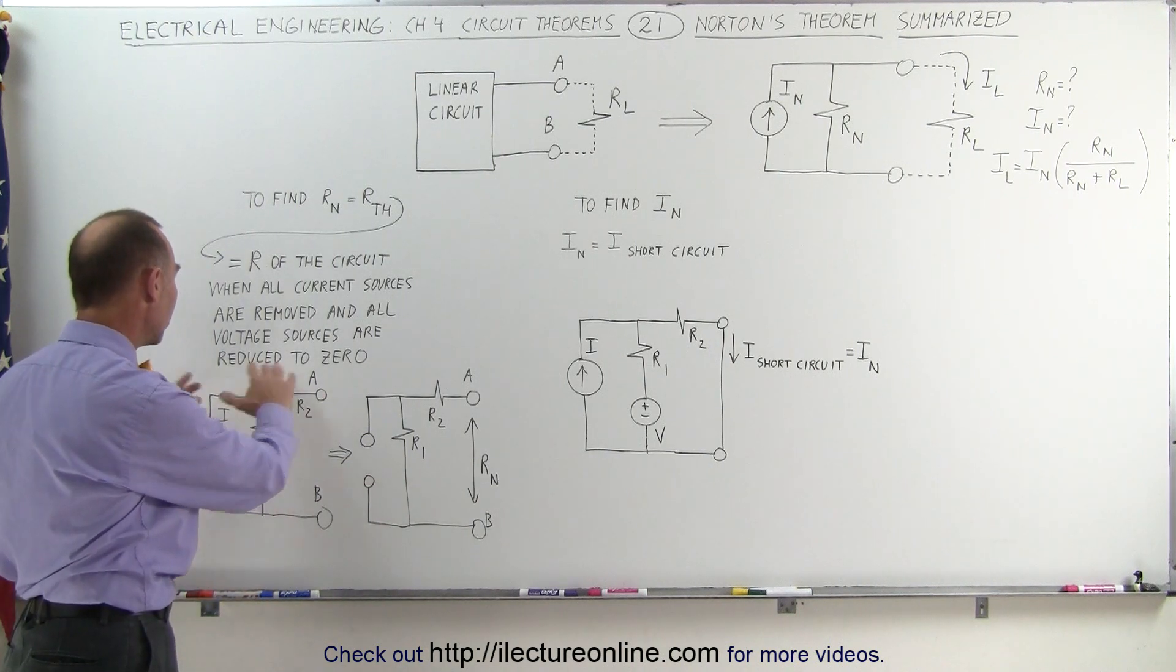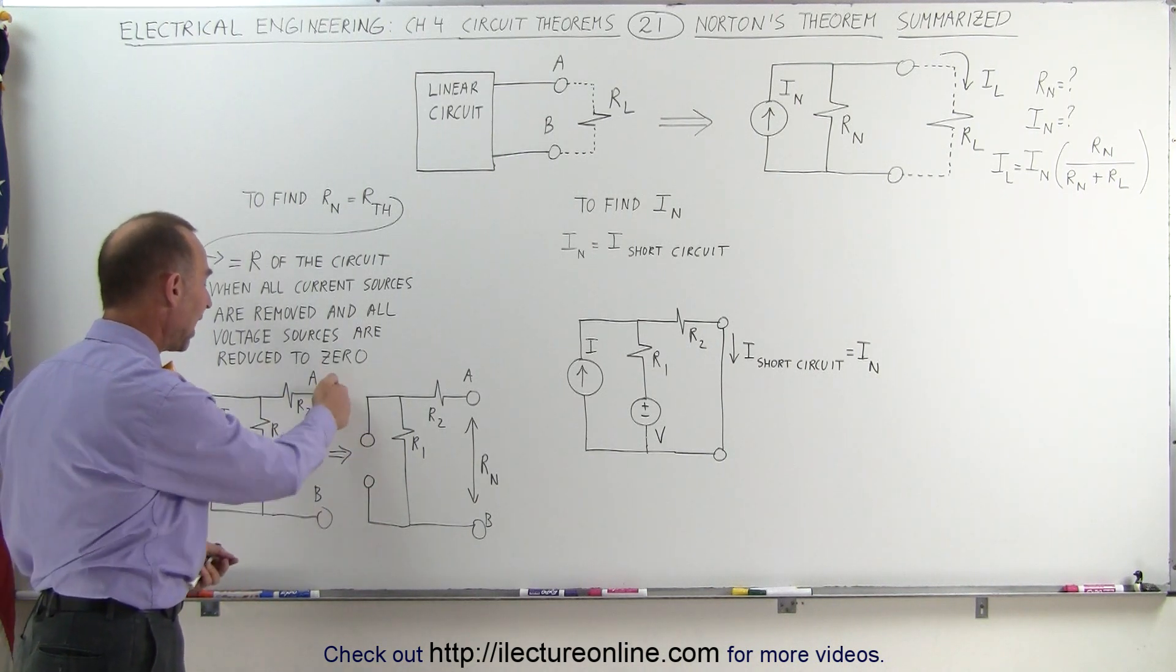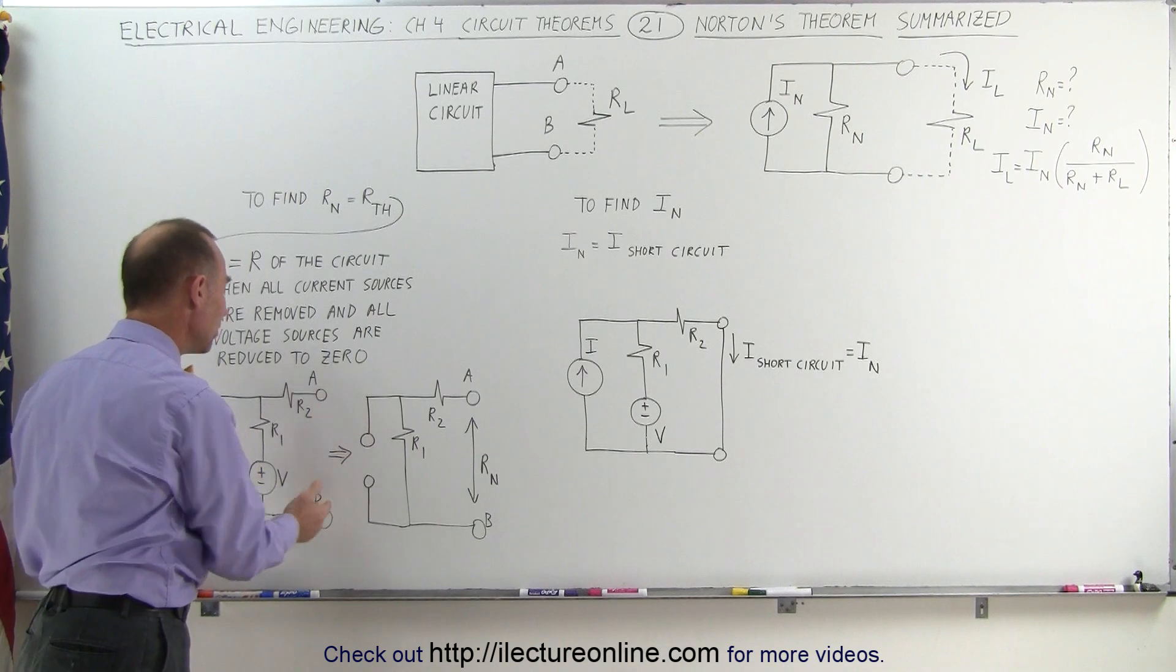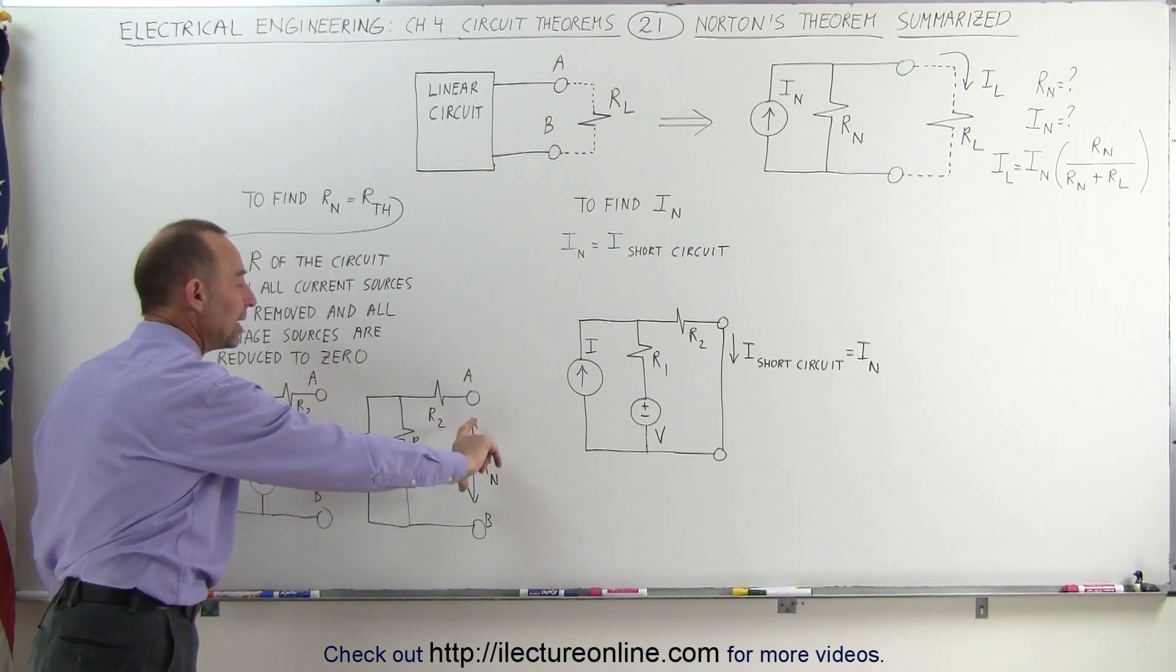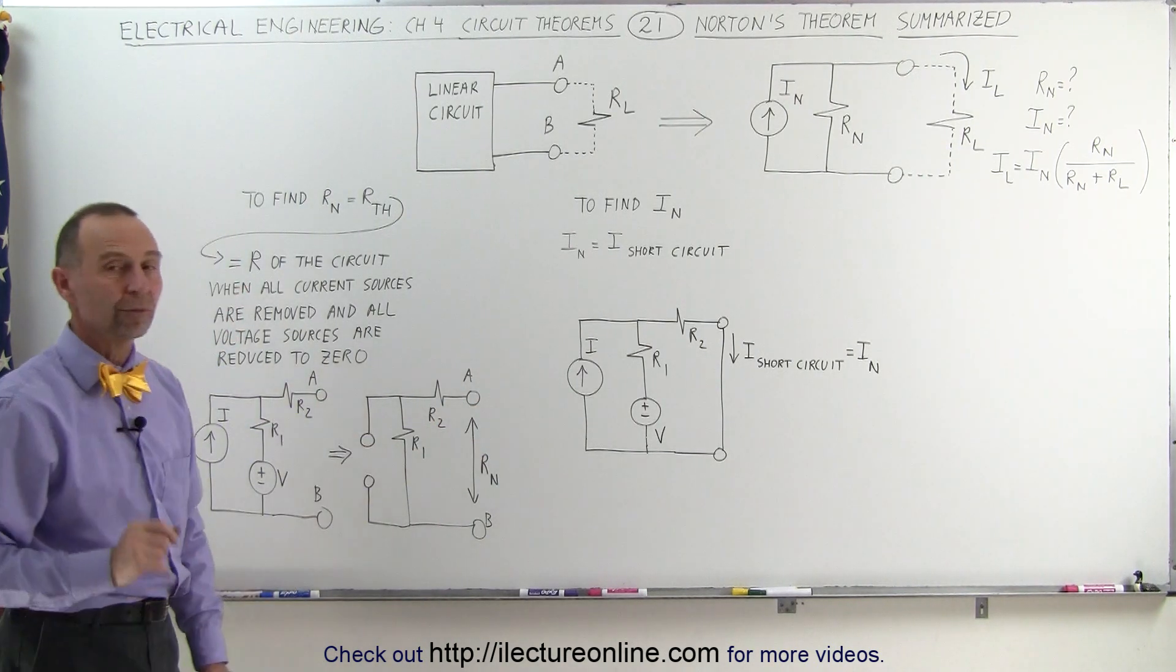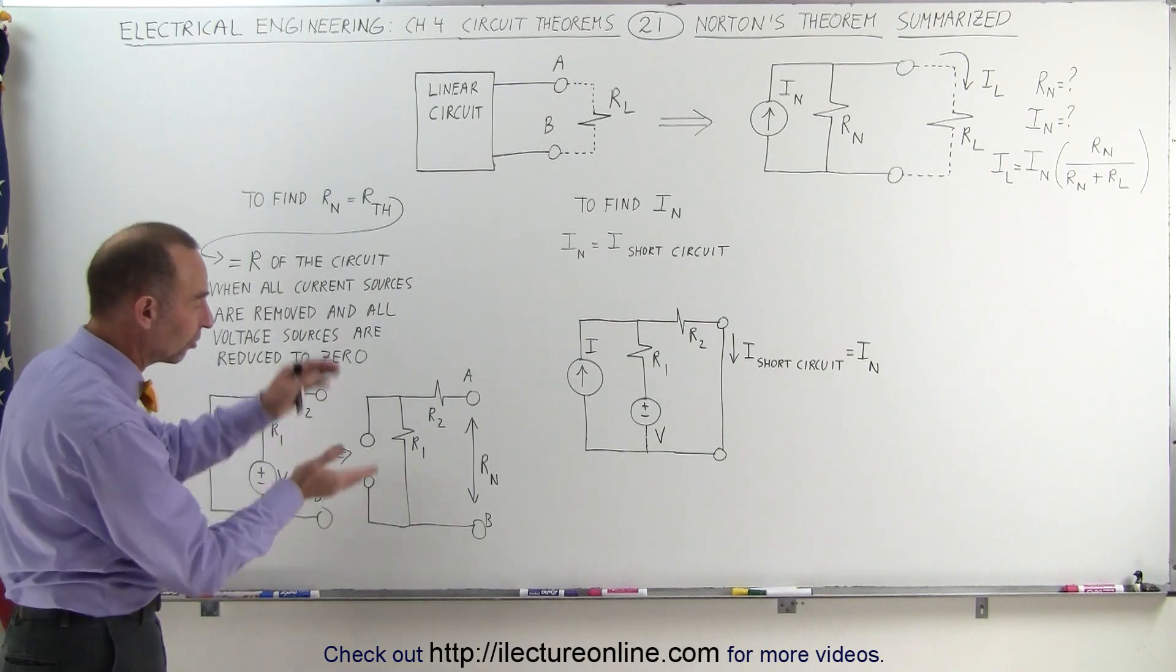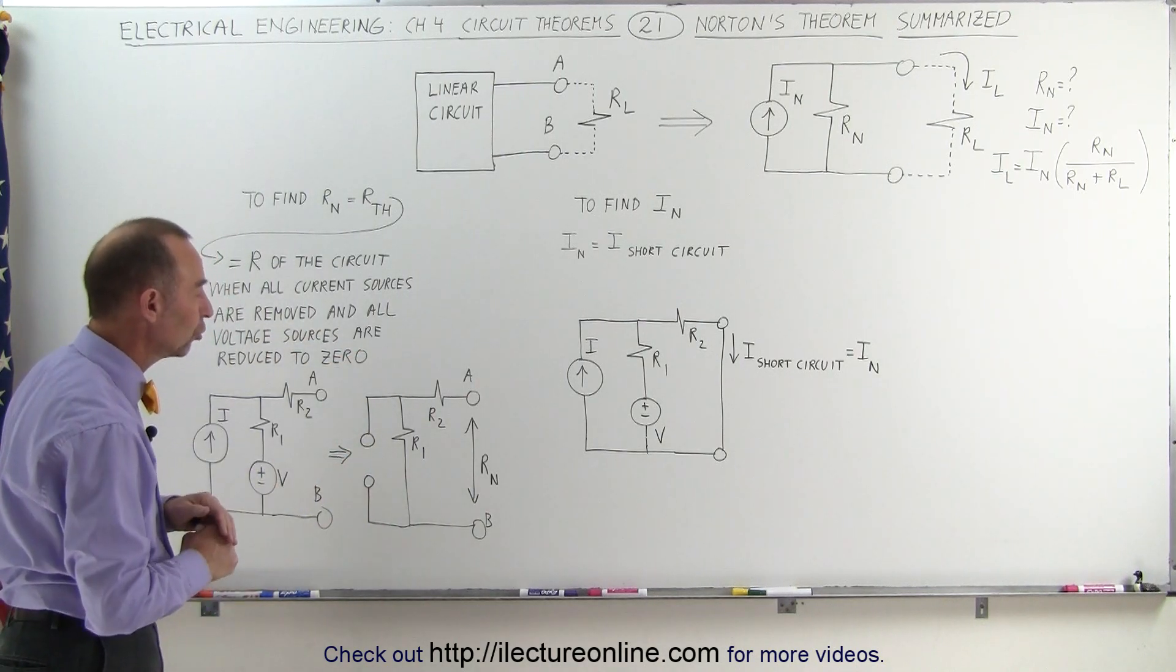We still contain all the resistors of the circuit, but we have the terminals A and B, we have that open and then we read the resistance across those two terminals from A to B. So we remove the load resistor and we measure the resistance across the two terminals.